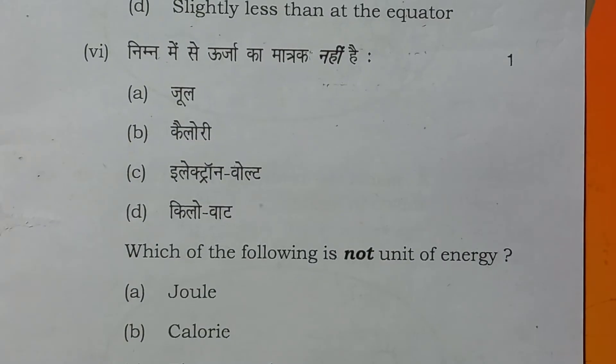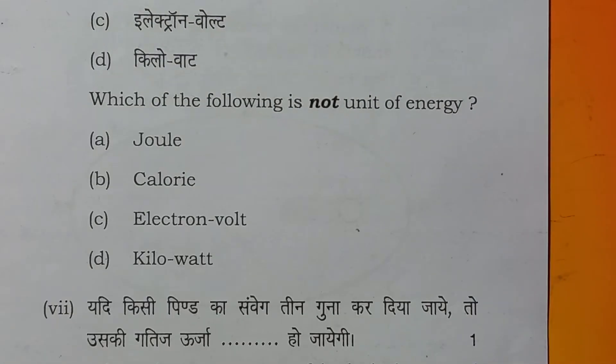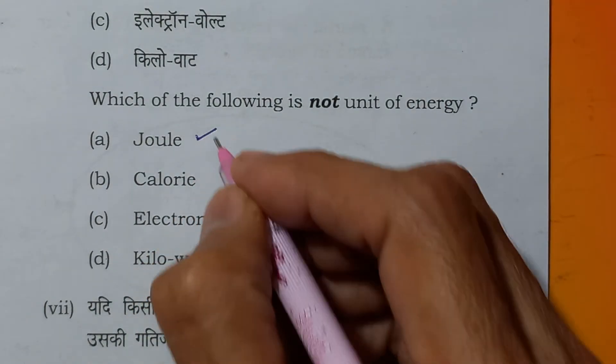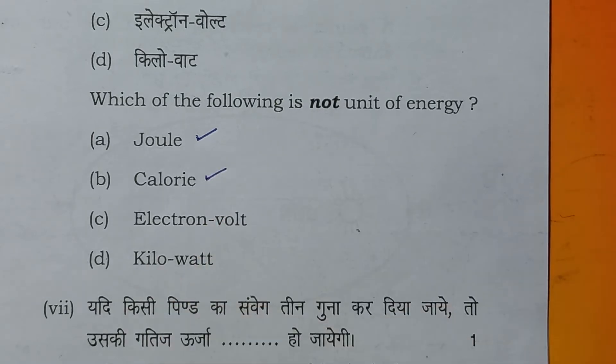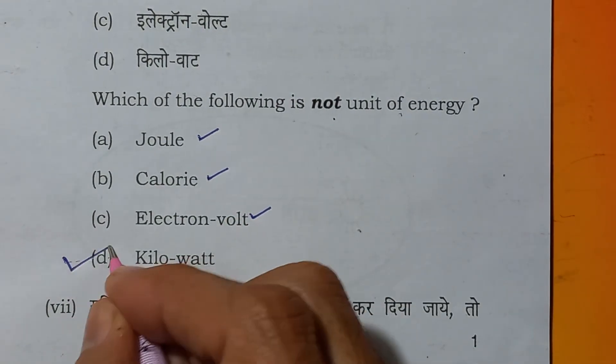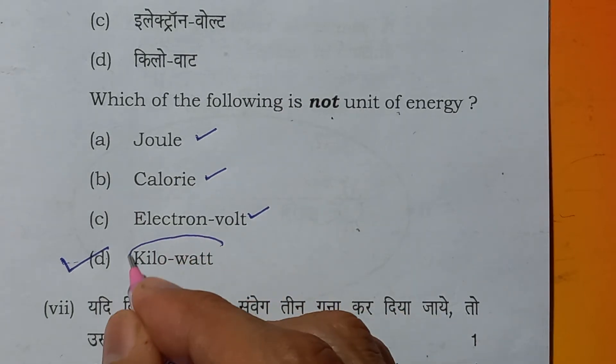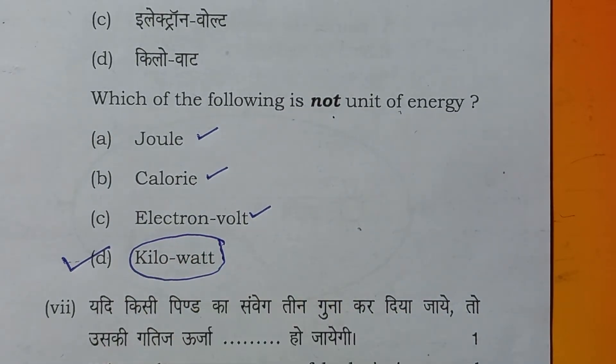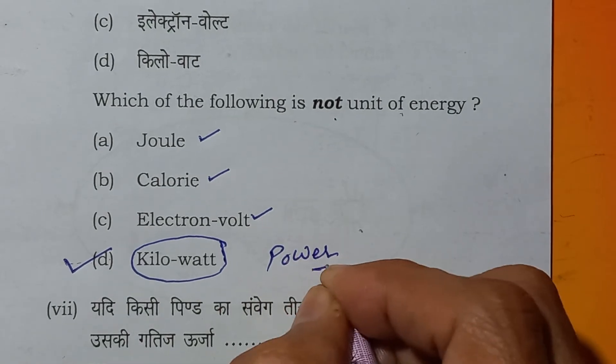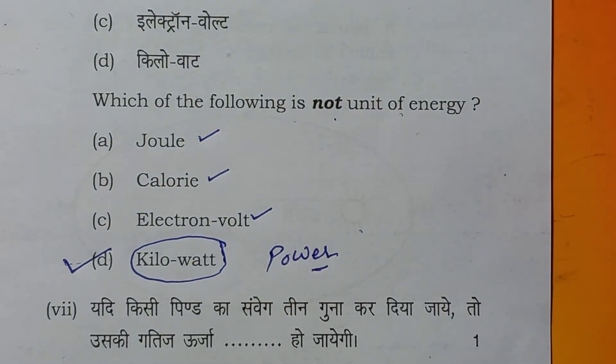Which of the following is not a unit of energy? We know joule is a unit of energy. Calorie is also a unit of energy. Electron volt is also a unit of energy. We have to tell not a unit of energy. That means kilowatt, this is a unit of power. The right answer will be D.